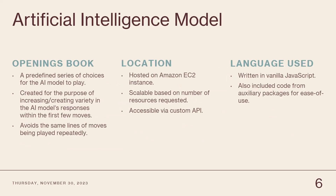We also have an openings book, which is a predefined set of lines that the AI model can play with to enhance the variety and therefore provide a greater challenge to the user. It's located on an Amazon AWS EC2 instance, from where the website will be able to access it, and this is written in vanilla JavaScript, with some assistance from some auxiliary packages.